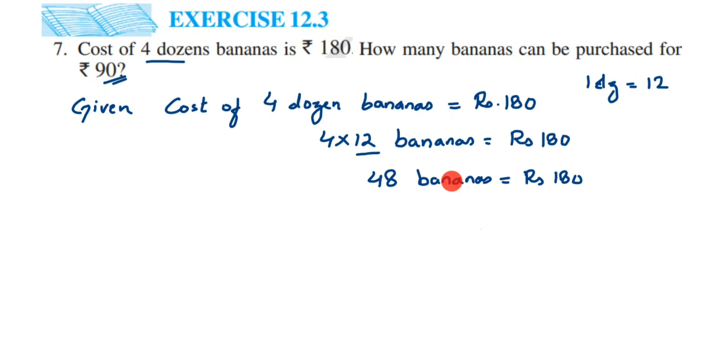This 48 I'm going to transpose to the other side. I hope you all learned the transpose method. So cost of one banana is equal to rupees 180 divided by 48. We're going to divide this number.